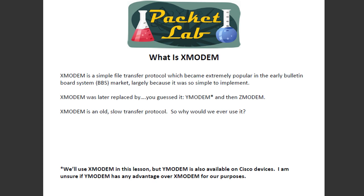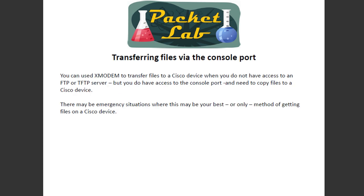Xmodem was eventually replaced by Ymodem, which does give you a little bit of a speed boost and is available on Cisco devices — though I don't know that it gives any advantage over Xmodem, so we're not going to look at it. And then eventually, of course, the inevitable Zmodem. So you had X, Y, and Zmodem. Xmodem is an old, slow transfer protocol, so why the hell would we ever need to use it?